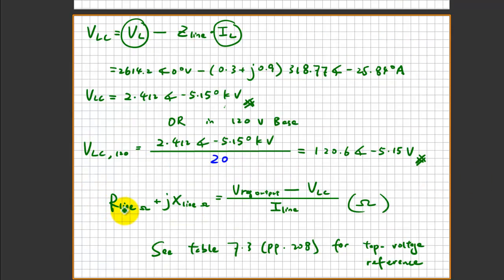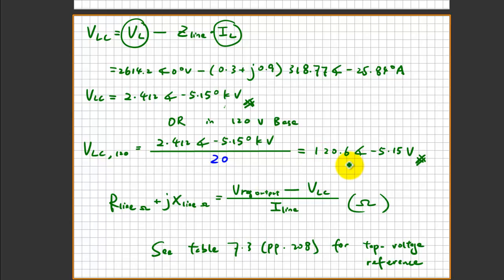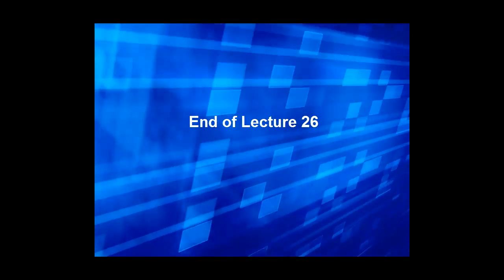The R_line + jX_line can also be calculated by measuring the regulator output voltage minus the load center voltage V_LC, then dividing by the current between the two points. You can refer to table 7.3 on page 208 to see the relationship between tap voltage reference and corresponding voltage on the 120 V base. Hope this helped.